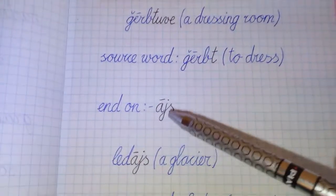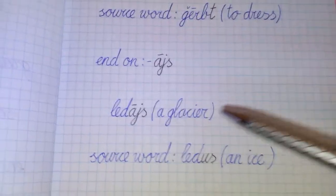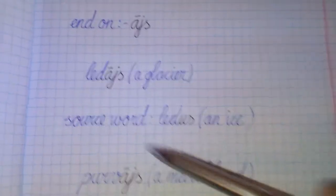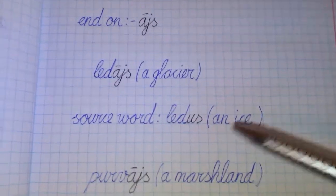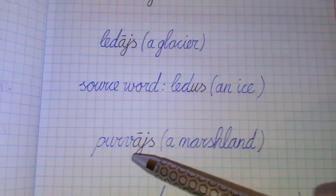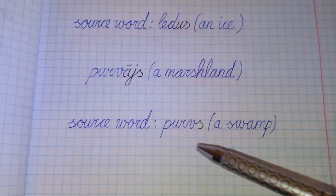Ending -ās. For example, ledājs, a glacier. Source word ledus, ending -us. Purvājs, ending -ās, a marshland. Source word purvs, the swamp.